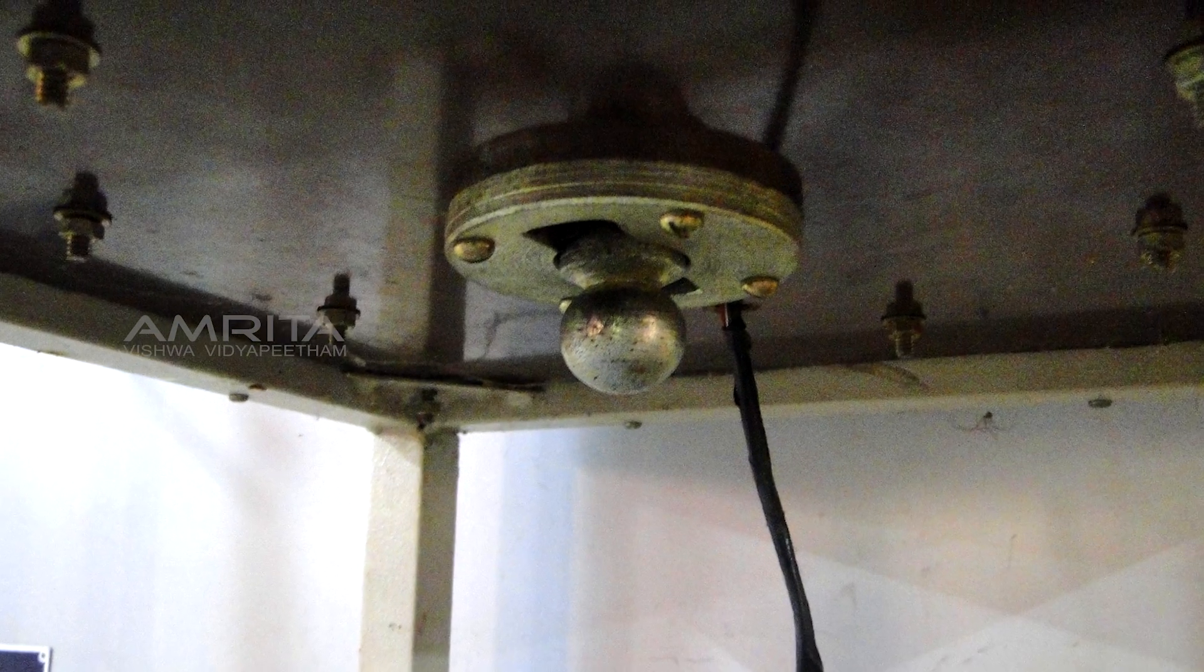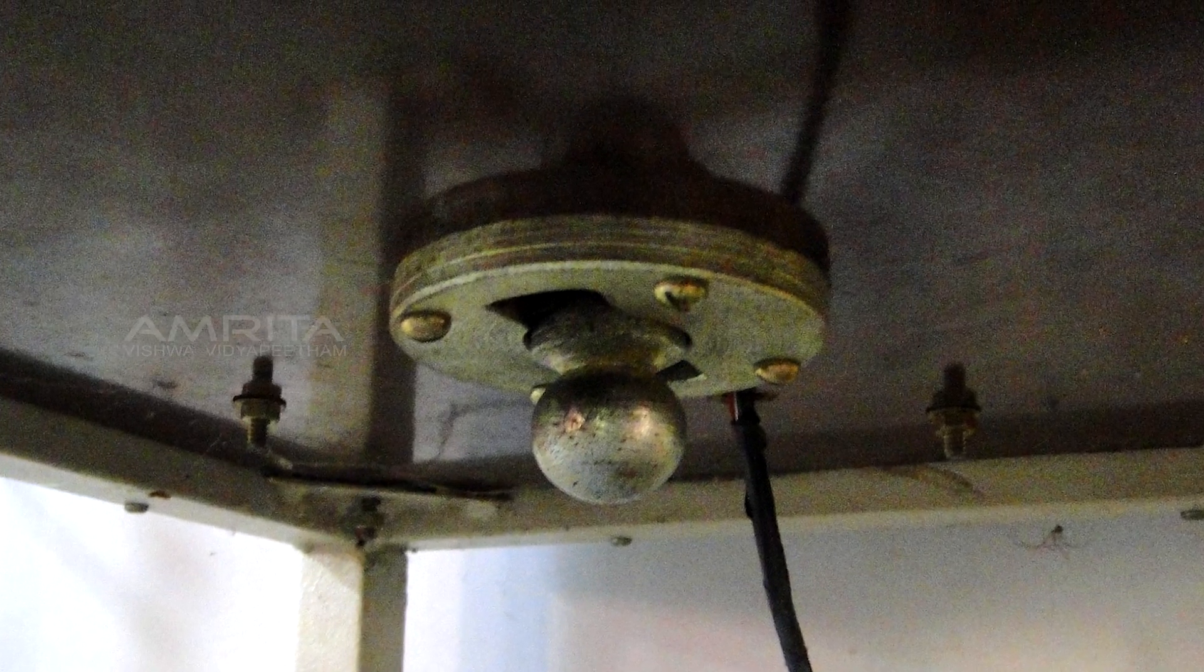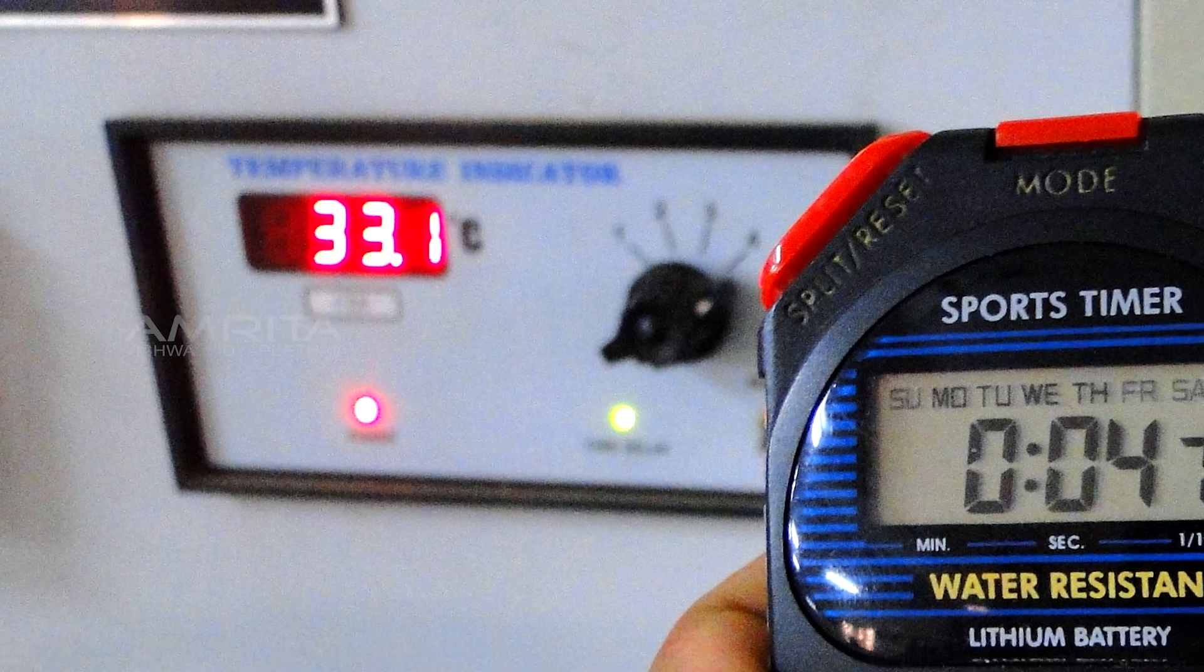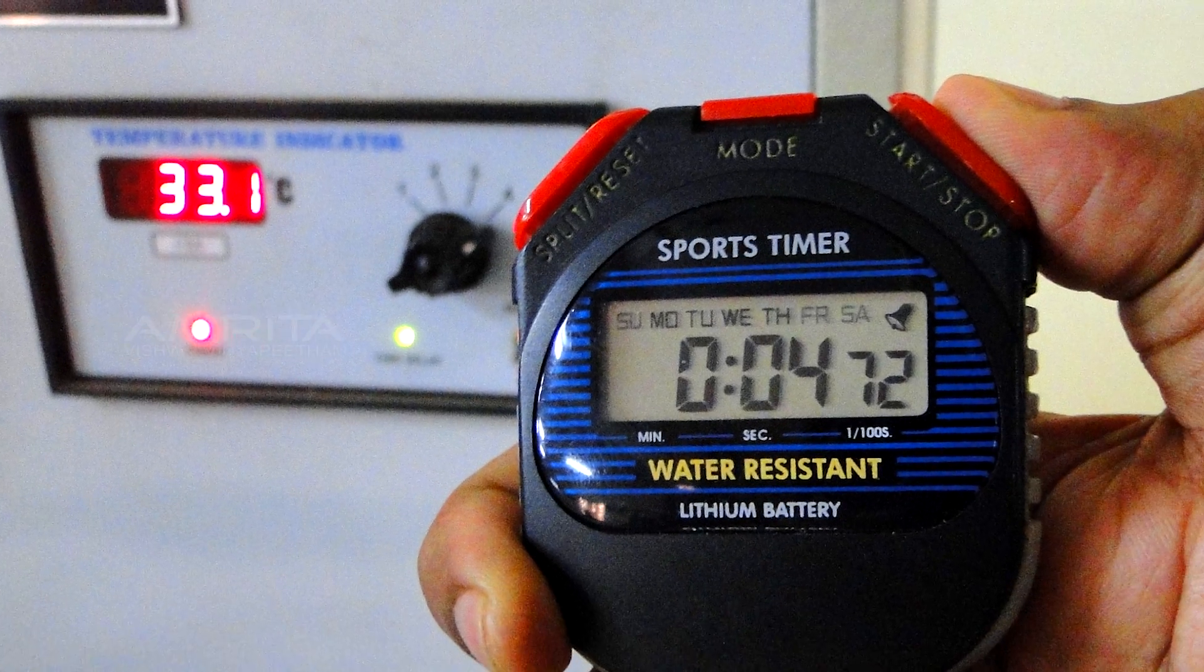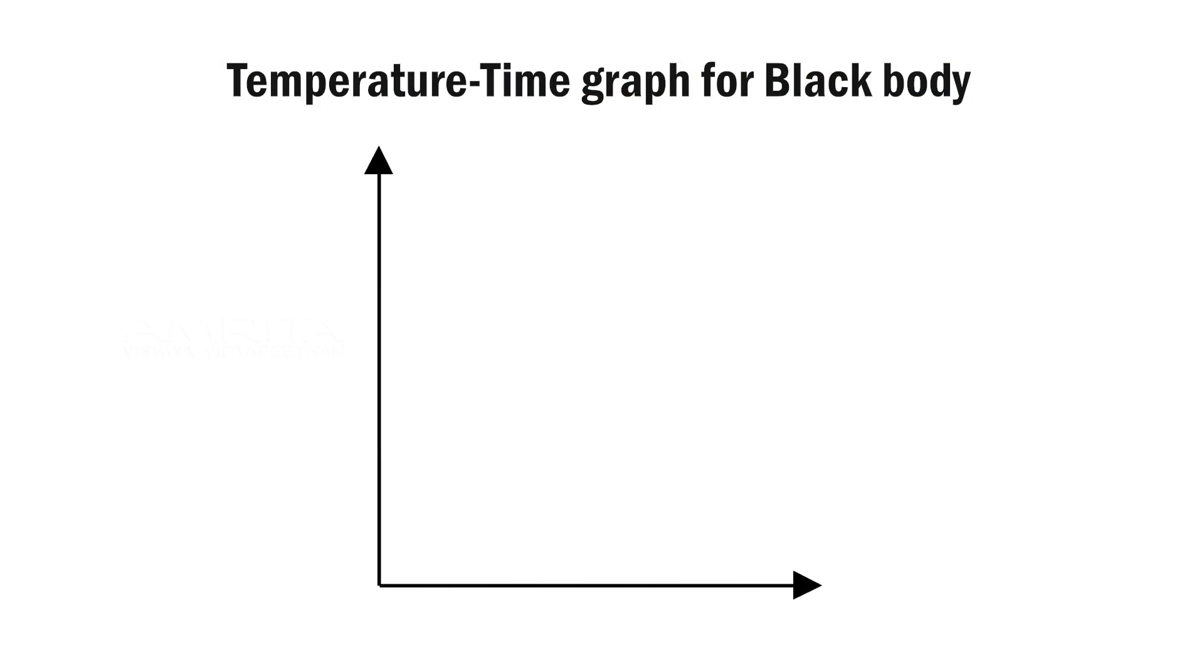Fit the black body disc at the bottom of the hemisphere. Note down the black body temperature at different intervals of time. Plot the temperature time graph and determine the slope dT by dt, where slope equals dT by dt equals BC divided by AB.